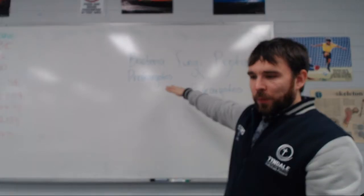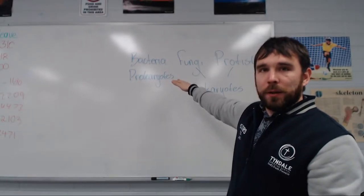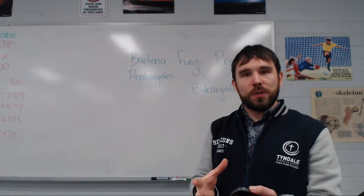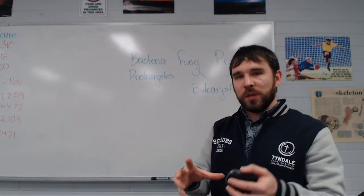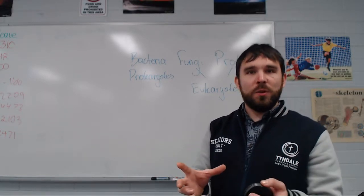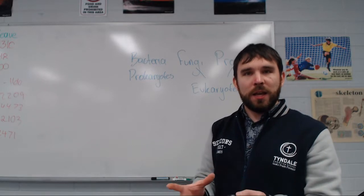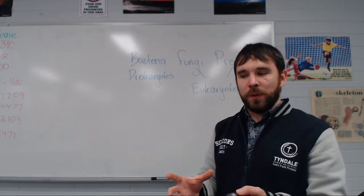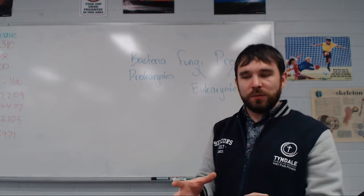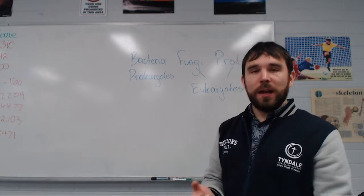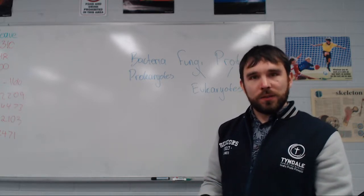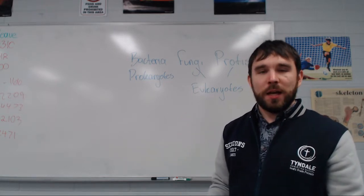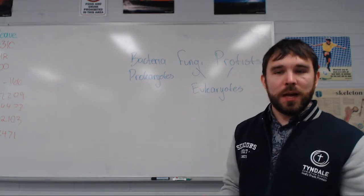The bacteria are our prokaryotes — those simple, single-celled unicellular organisms. They don't have a nucleus and they don't have any membrane-bound organelles; they are quite simple, with a range of different shapes and sizes. Our fungi are like our yeasts that we use to make bread and beer, and our protists are our algae and seaweed.